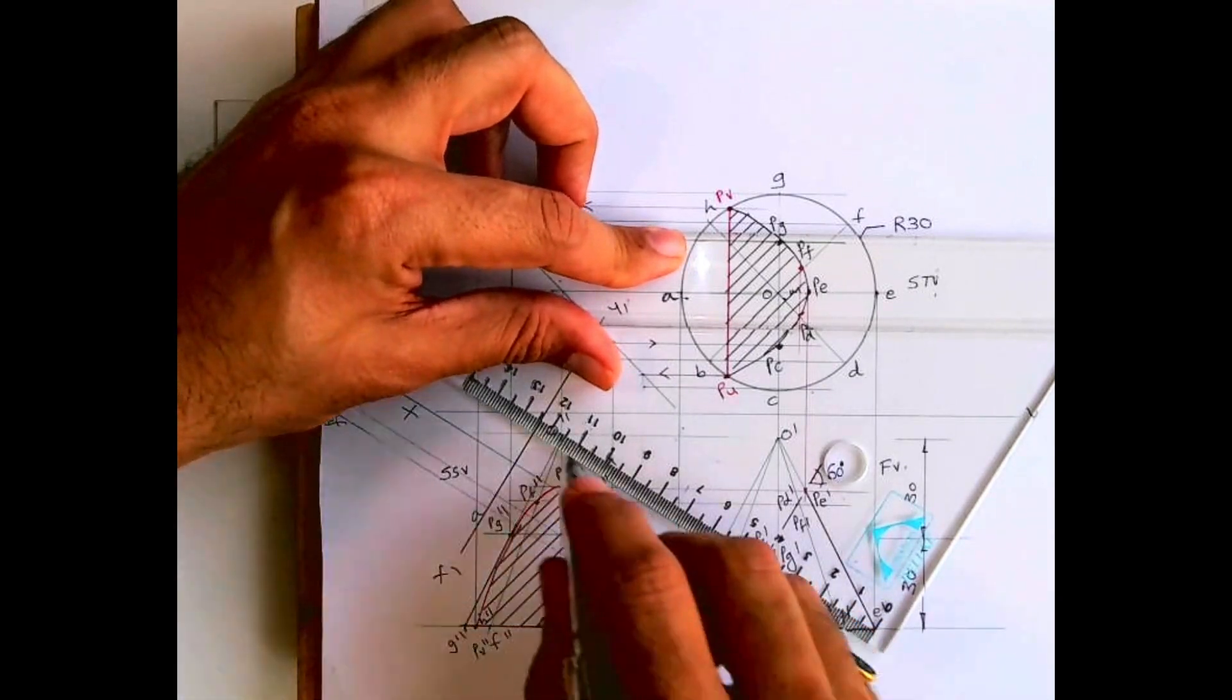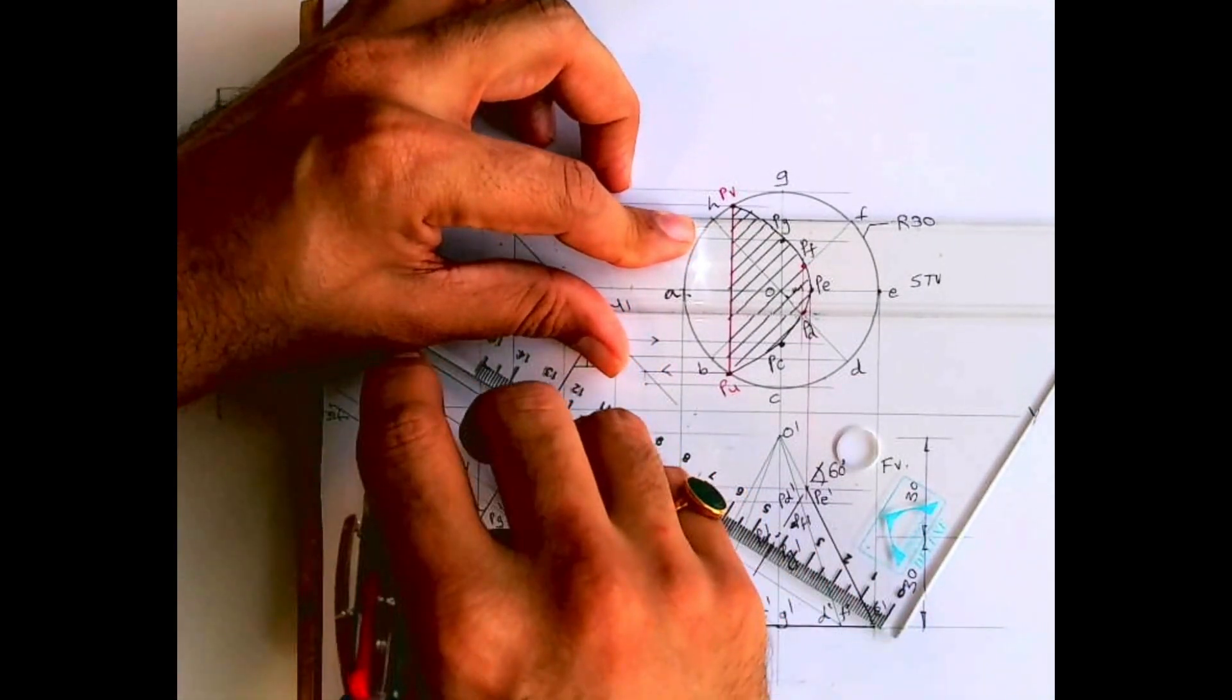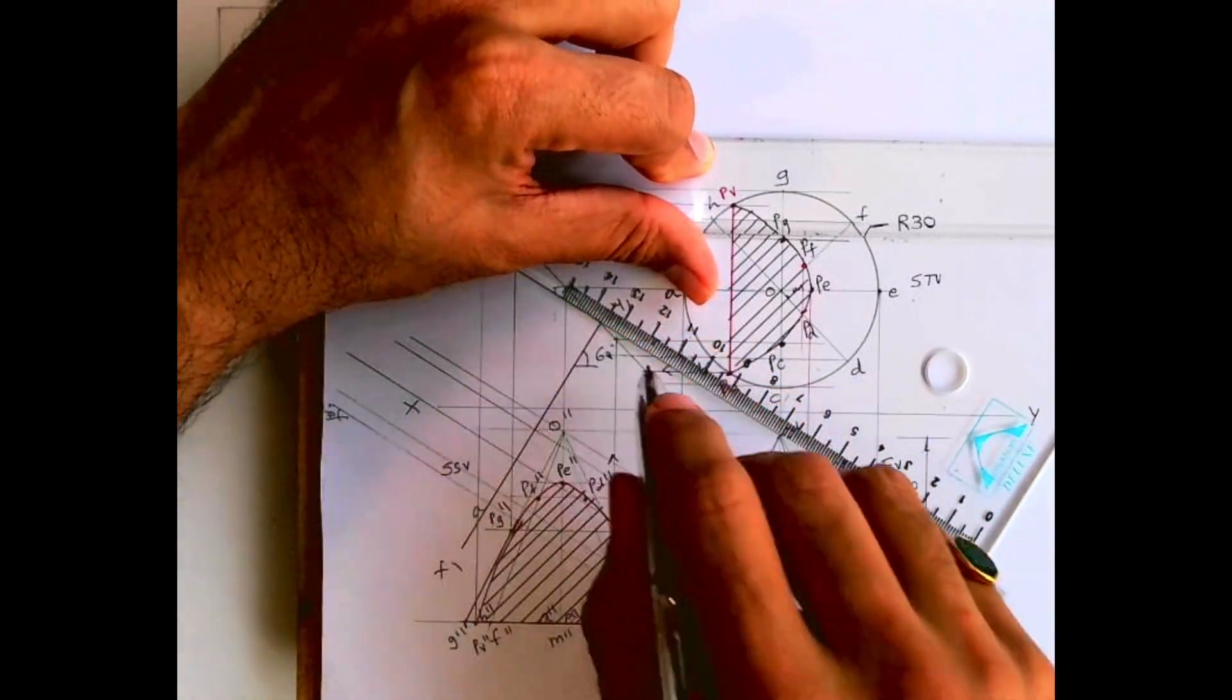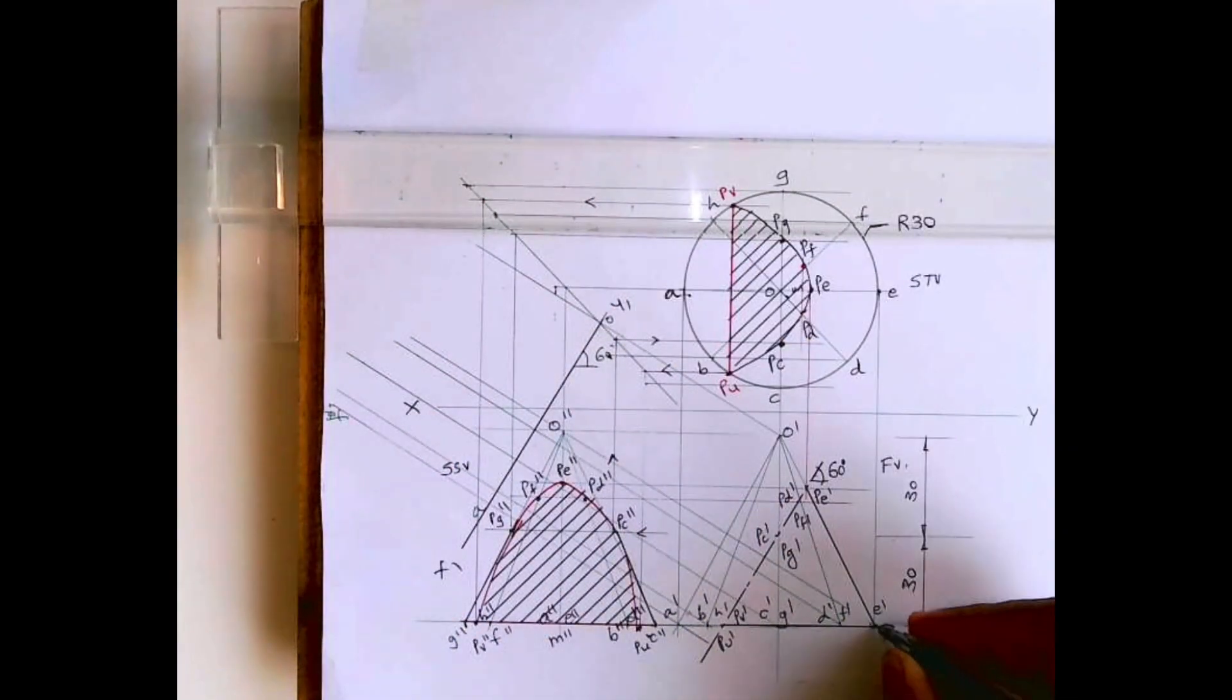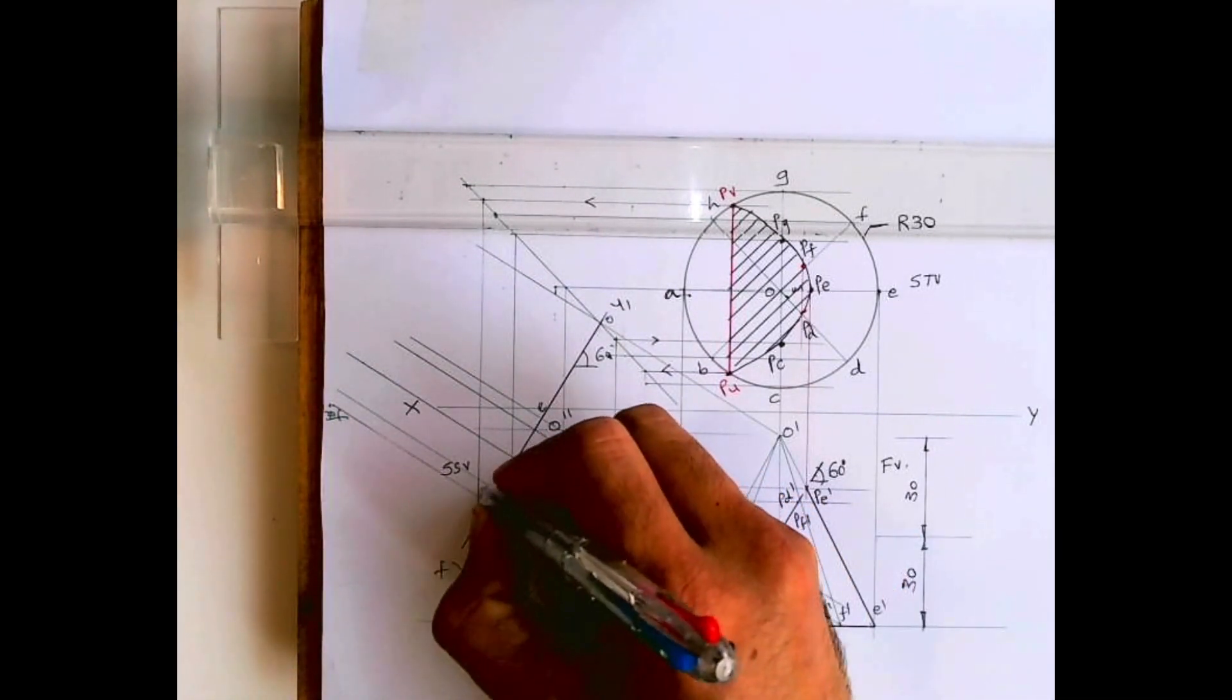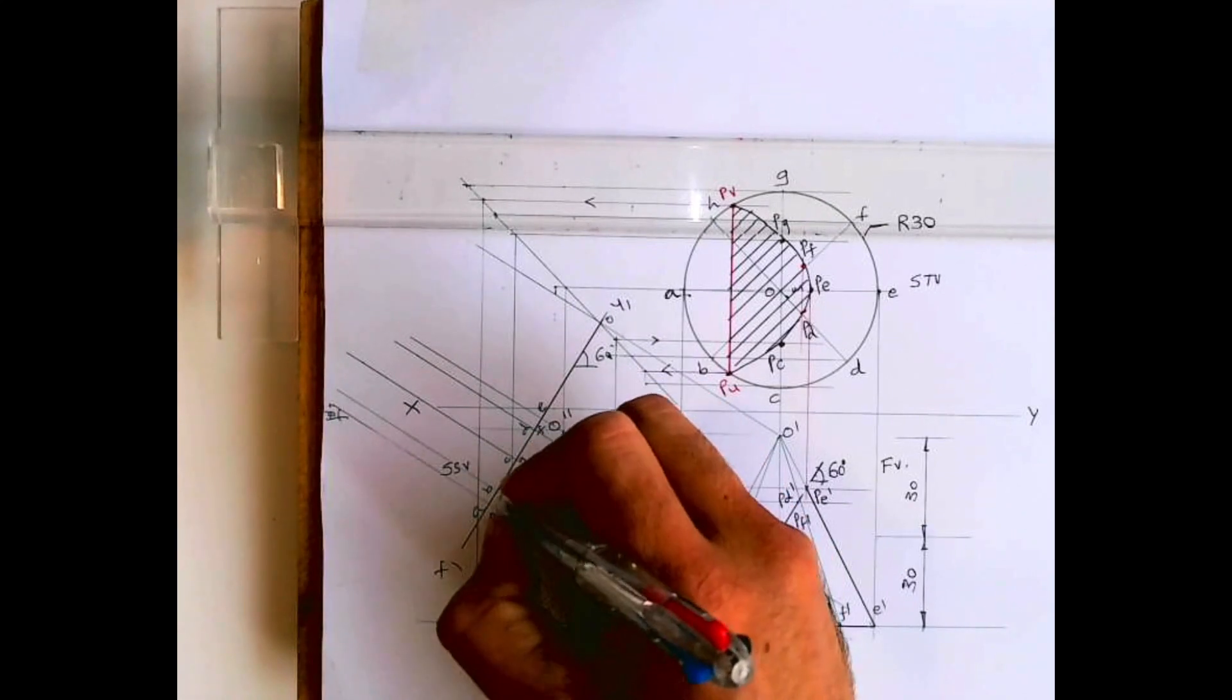See, I have taken points from all this: a, b, c, d, e, f, g, h, and o. Now marking a over here, b, c, d, e, f, g, h.